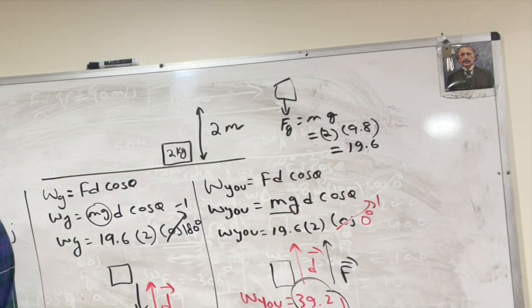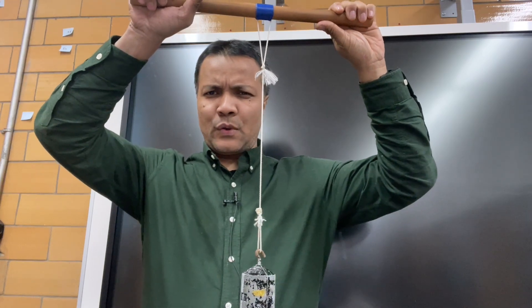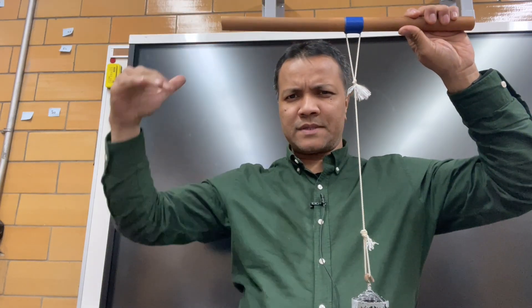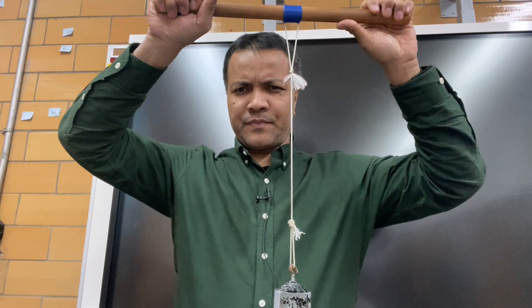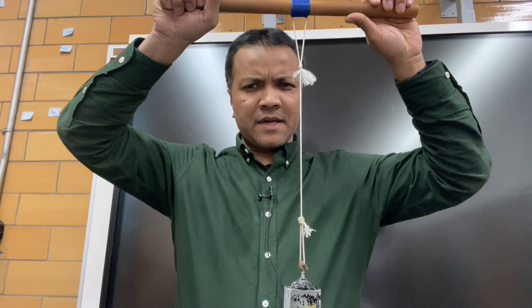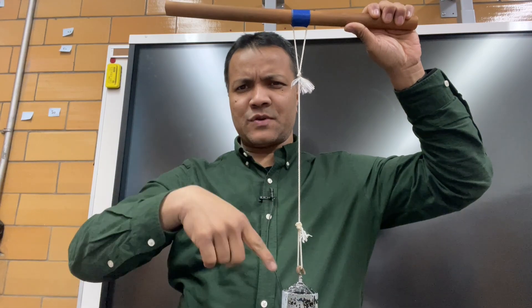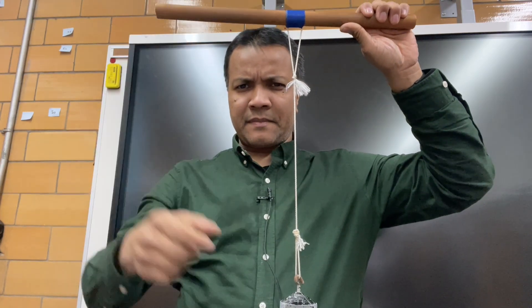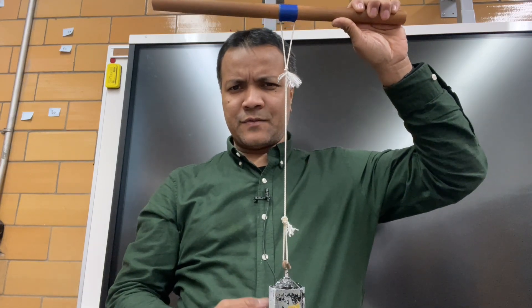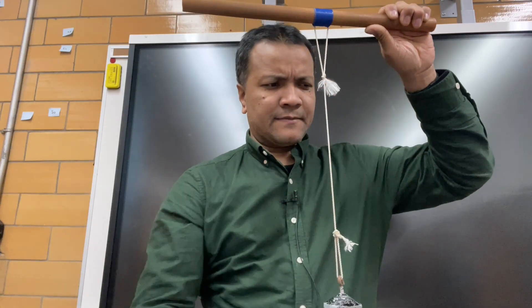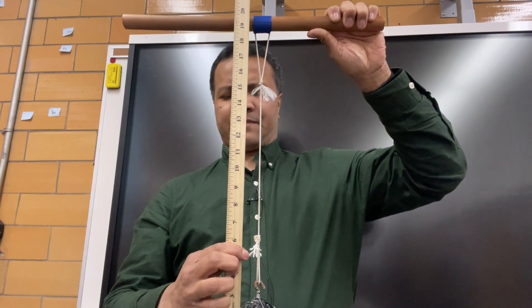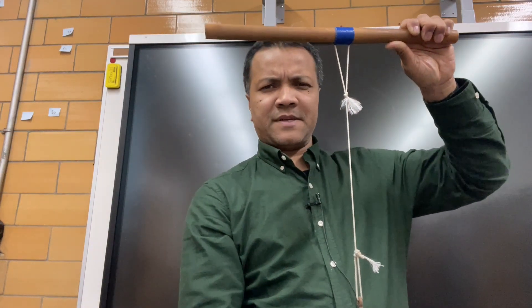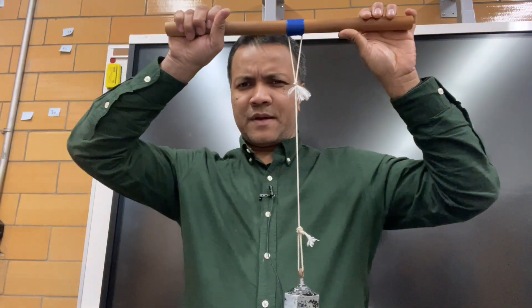Now we're going to connect this idea with power. Take a look at the video — we're going to make a connection between work and power. Work is F times d times cosine theta, and power is the rate at which work is done, meaning work over time. When I am holding this weight — a mass suspended on a rope — there is zero displacement, so work done is zero. If I lift this one kilogram mass upward for a height of 48 centimeters, then you would be able to find the work and the power.